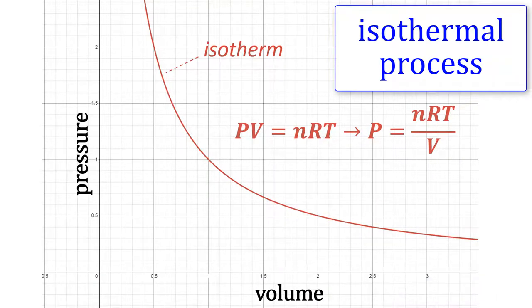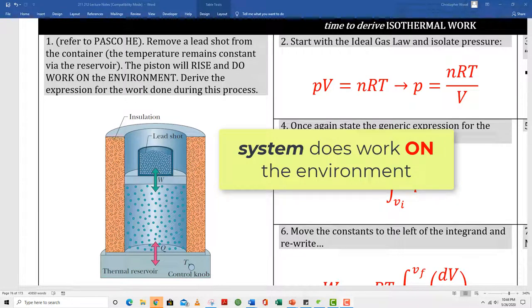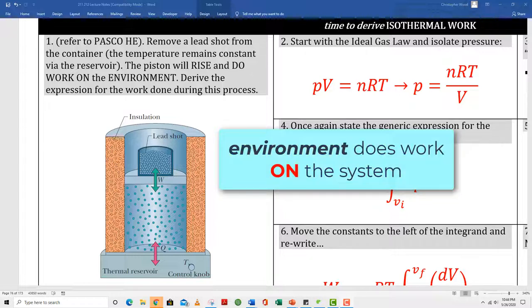Here's the resulting PV diagram. Because temperature is constant, the independent variable is V and the dependent variable is P — that's why you have this hyperbolic curve. Pressure and volume are inversely proportional. This plotted function is called an isotherm. Every point on that isotherm has different pressure and volume values, but the product PV equals a constant. If I remove lead shot, the piston rises and the system does work on the environment. Conversely, if I add lead shot, the piston lowers and the environment does work on the system.